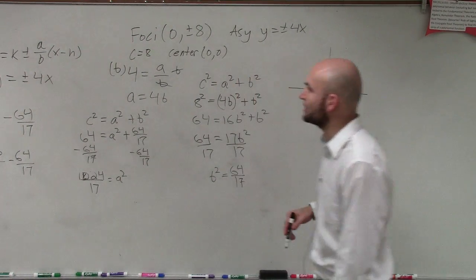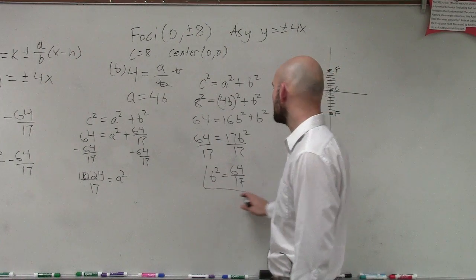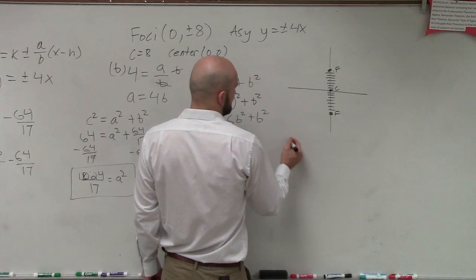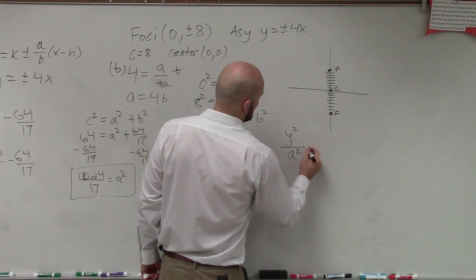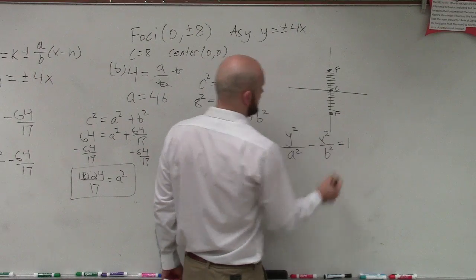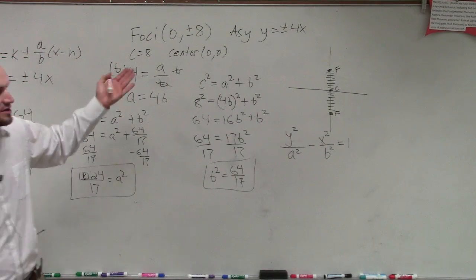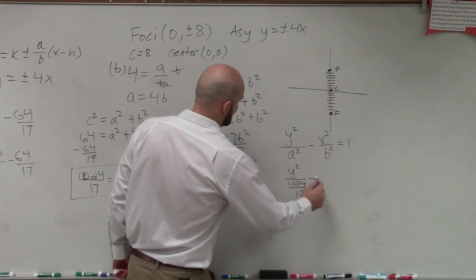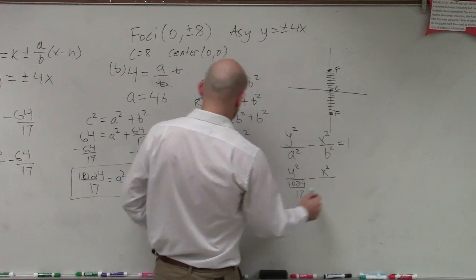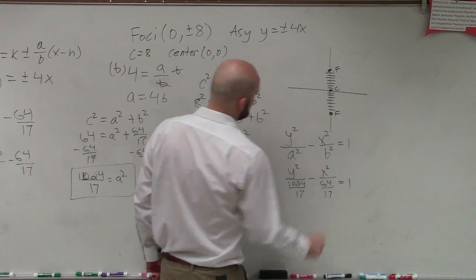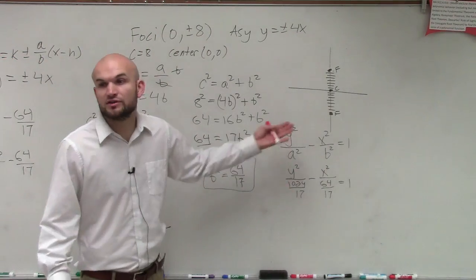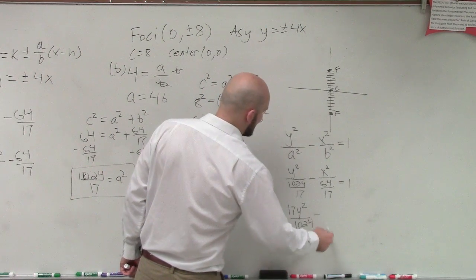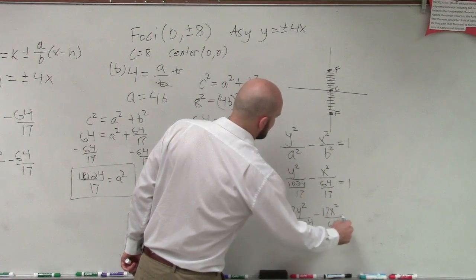Alright, so our final answer here, now we know what b squared is, and we know what a squared is, and we know our center is zero, zero, so that's not bad, and we know it's a vertical, so therefore, our formula is going to be y squared over a squared minus x squared over b squared equals 1. I don't need to do the h and the k because I know the center is at zero, zero. So, therefore, I have y squared over a squared, which is 1024 over 17 minus x squared over b squared, which is 64 over 17 equals 1. We don't want to write a fraction divided by another fraction, so I'll just invert this as the multiplication. So my final answer is going to be 17 y squared over 1024 minus 17 x squared over 64 equals 1.